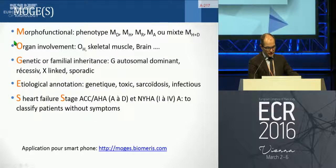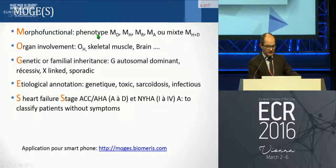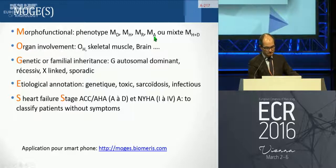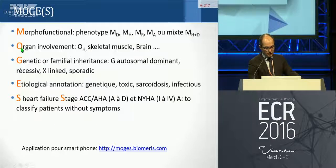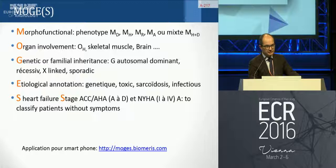The first letter of MOGES is M for morphofunctional — this is the phenotype. You can define dilated, hypertrophic, restrictive, or mainly involving the right ventricle. After that, you classify O for organ involvement: heart, skeletal muscle, brain, and so on.